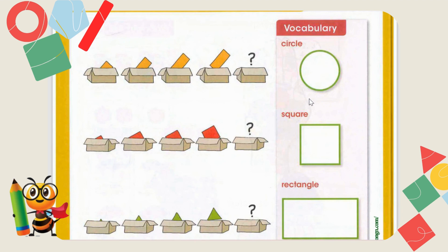Right now, while you are watching this video, identify three circle-shaped objects nearby you. For example: a coin, a circular plate, or the cap of a box or tin. Just look around, and find out what is the shape of that thing.